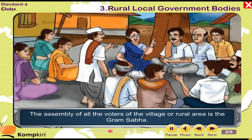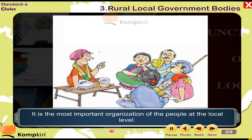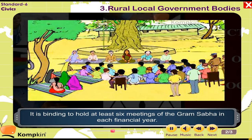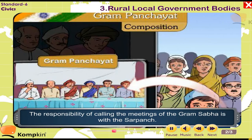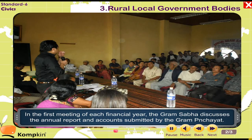The Gram Sabha is the assembly of all the voters of the village or rural area. It is binding to hold at least six meetings of the Gram Sabha in each financial year. The responsibility of calling these meetings is with the Sarpanch. In the first meeting of each financial year, the Gram Sabha discusses the annual report and accounts submitted by the Gram Panchayat.